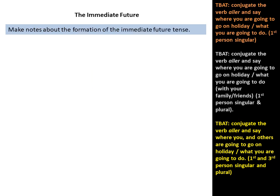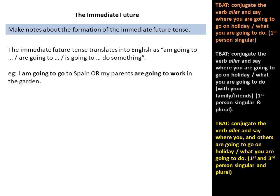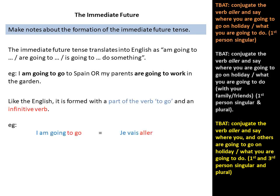So let's look at the immediate future tense. Listen to what I've got to say and then make notes about the formation of the immediate future. The immediate future translates into English as 'am going to', 'are going to', or 'is going to do something'. For example, next year I am going to go to Spain, or tomorrow my parents are going to work in the garden. Like the English, it is formed with part of the verb 'to go' and an infinitive verb.